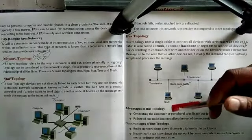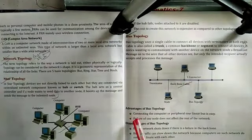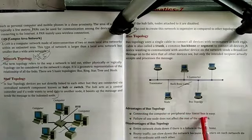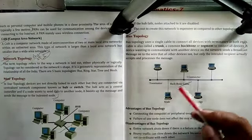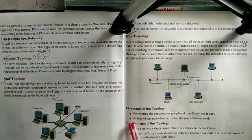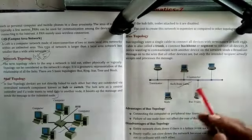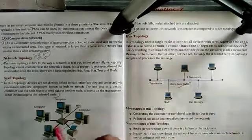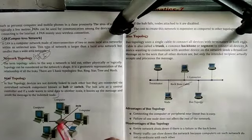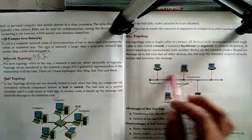There are some advantages of bus topology. The first point is that connecting computers or peripherals to the bus line is easy — with the help of the backbone you can easily connect any type of node. The second advantage is that failure of one node does not affect the rest of the network. A disadvantage is that the entire network goes down if there is a failure in the backbone cable.